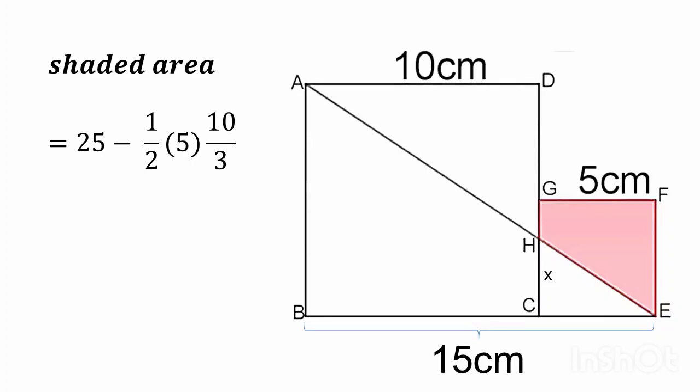Simplify this and we will get 25 minus 25 by 3. Simplify again and we will get 50 by 3 cm square.